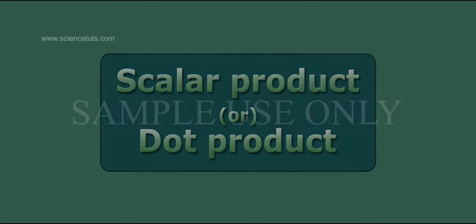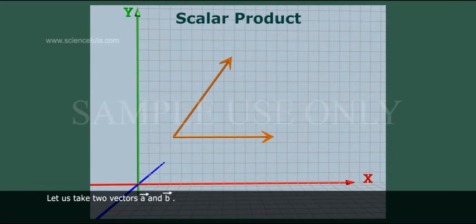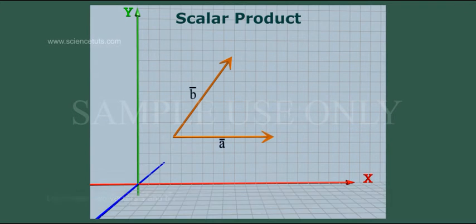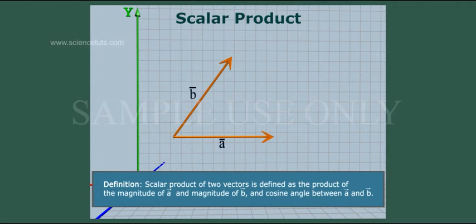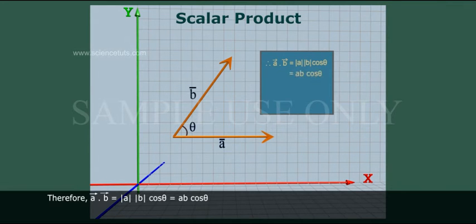Scalar product or dot product. Let us take two vectors, A bar and B bar. Definition: the scalar product of two vectors is defined as the product of the magnitude of A bar and magnitude of B bar and cosine of the angle between A bar and B bar. Therefore, A bar dot B bar is equal to modulus of A into modulus of B cos theta, which is equal to AB cos theta.